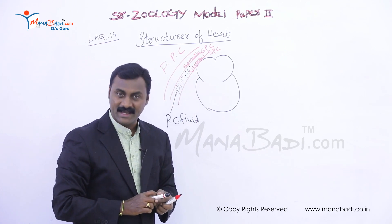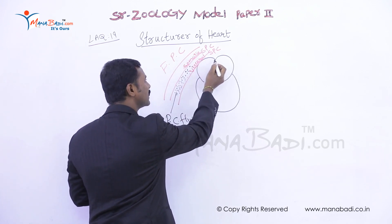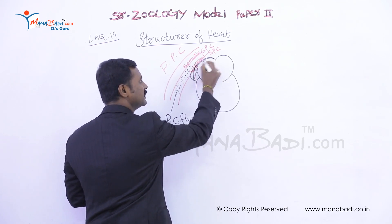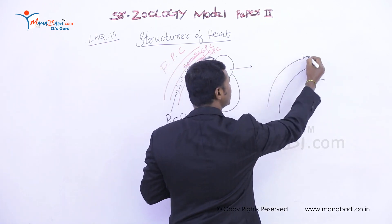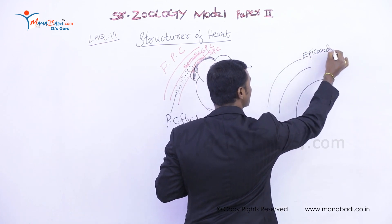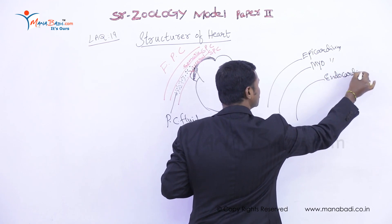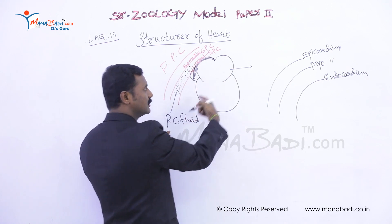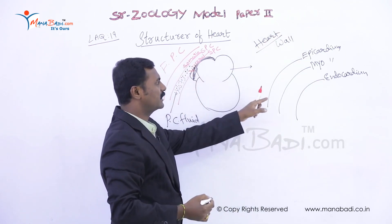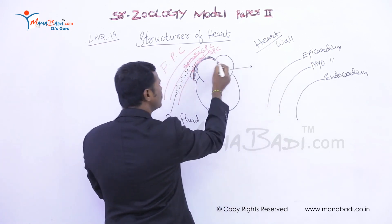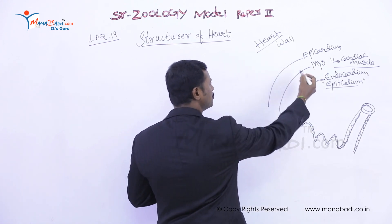The heart wall is made with three layers. The outermost is the epicardium, the middle is the myocardium, and the innermost is the endocardium. Epicardium is almost in contact with the visceral serous pericardium. Myocardium consists of cardiac muscles, which are very important for heartbeat — especially for heart contraction and relaxation, called systole and diastole.